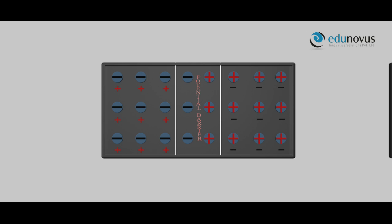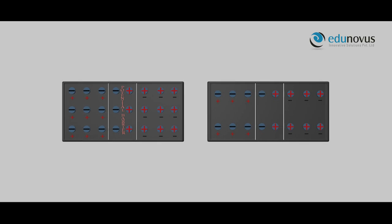Usually, it is used in the reverse breakdown region. You can see that the zener diode has more charge carriers when compared to the junction diode.